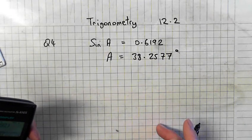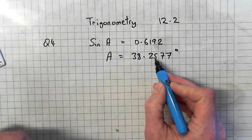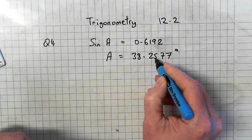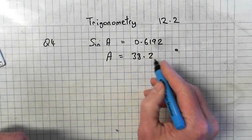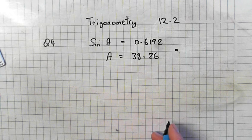Alright, you might be asked to round it off, round to two decimal places. That 7 will change the 5 to a 6. Alright, that's all you have to do there.